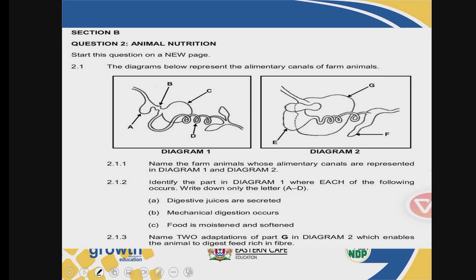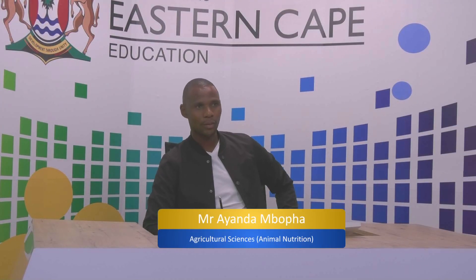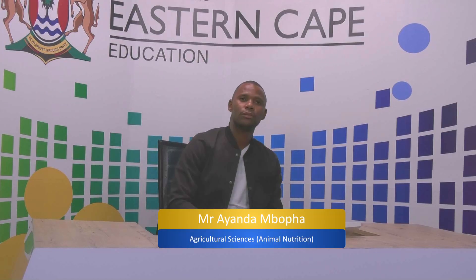Just a little activity: we are given two pictures, diagram one and diagram two, and we are asked to name the farm animal whose alimentary canals are represented. When you are asked to name, you write the name of the animal — whether it's a chicken, pig, or cattle. When asked to classify, you say monogastric or non-ruminant. In this case, diagram one is a chicken and diagram two is a ruminant. Ladies and gentlemen, let us go and pass agricultural sciences during these final examinations because South Africa is waiting for you to serve its ever-increasing population. Thank you.